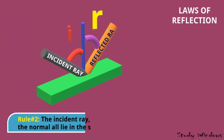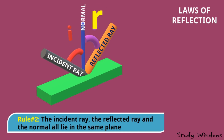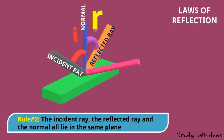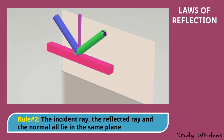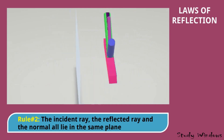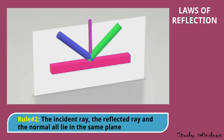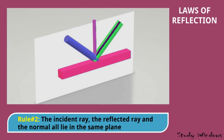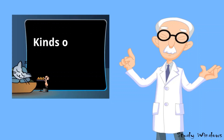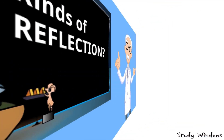Second law of reflection: the incident ray, reflected ray, and normal all lie in the same plane. They should not reflect in another plane — as shown by the pink plane, a different plane is not acceptable. In the video you can see that the incident ray, reflected ray, and normal are all in the same plane.